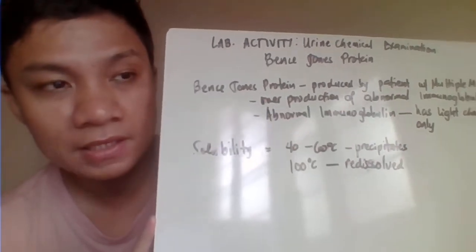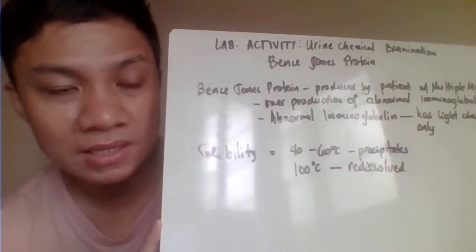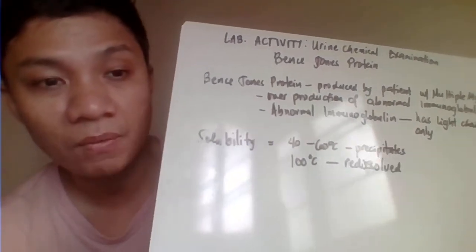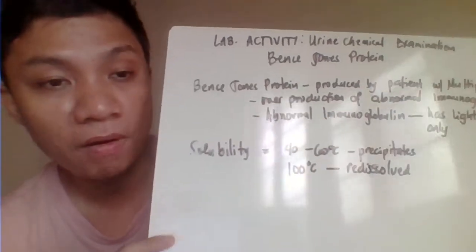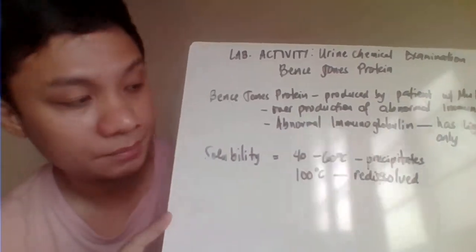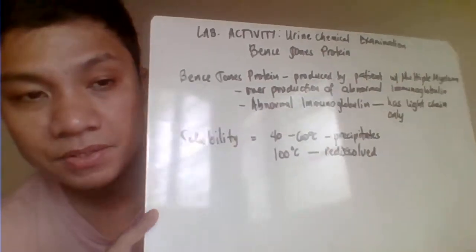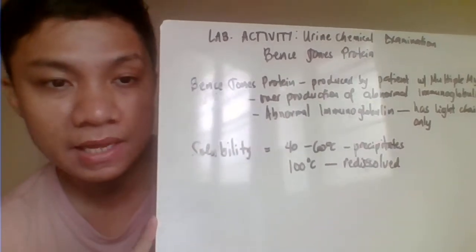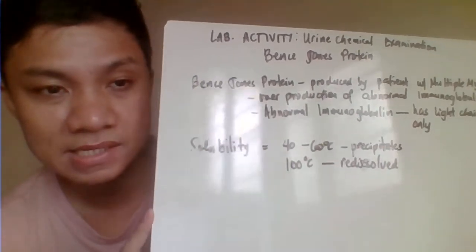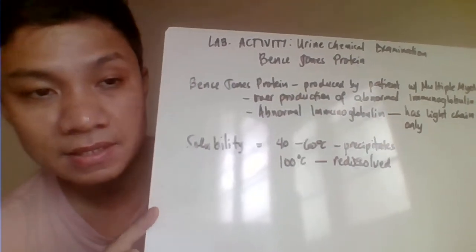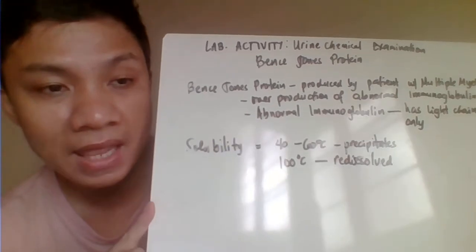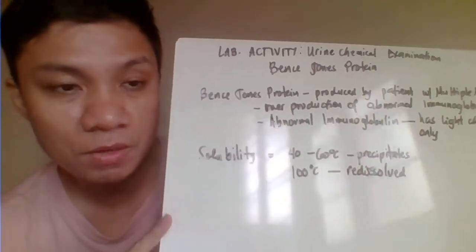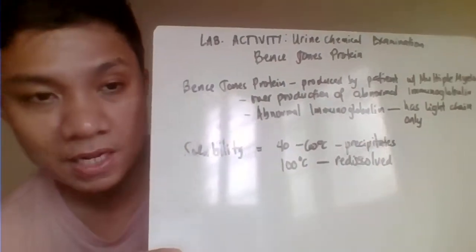Bence Jones protein is classified under the pre-renal type of proteinuria. The Bence Jones protein is identified by its unique solubility characteristics. Basically, this is the type of protein that precipitates at a temperature between 40 to 60 degrees Celsius.